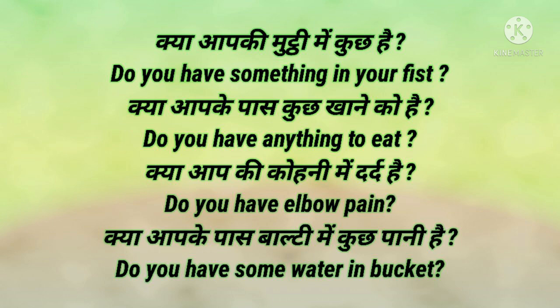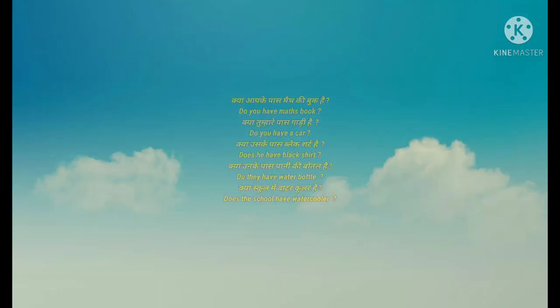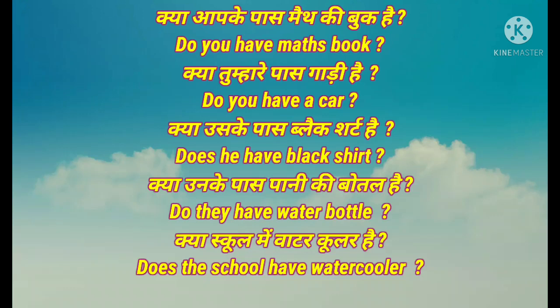Let's see some other sentences. Kya aapke paas math ki book hai — do you have a math book. Kya tumhare paas gaadi hai — do you have a car. Kya uske paas black shirt hai — does he have a black shirt. This is 'uske paas', that's why we use 'he' here. Kya unke paas paani ki bottle hai — do they have a water bottle. Kya school mein water cooler hai — does the school have a water cooler.